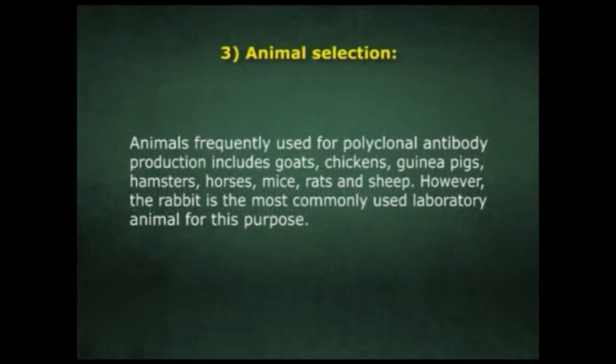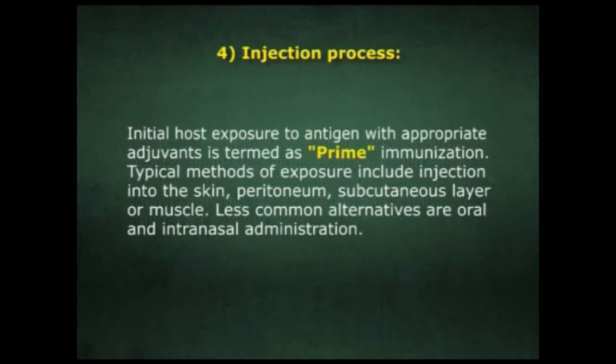The third procedure is animal selection. Animals frequently used for polyclonal antibody production include goats, chickens, guinea pigs, hamsters, horses, mice, rats, and sheep. However, rabbit is the most commonly used laboratory animal for this purpose. The fourth step is the injection process: initial host exposure to antigen with appropriate adjuvants is termed prime immunization.